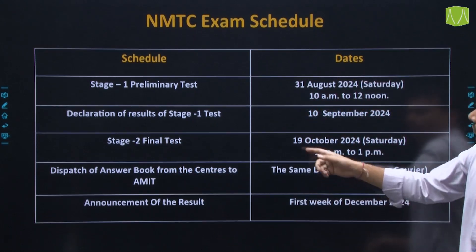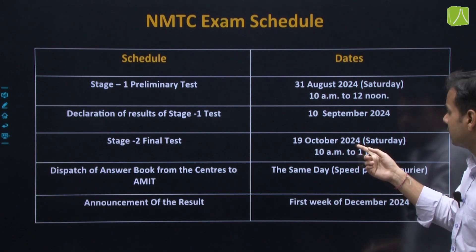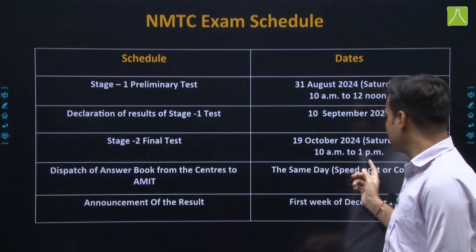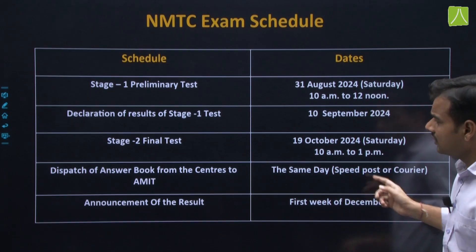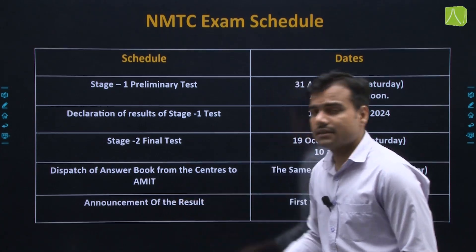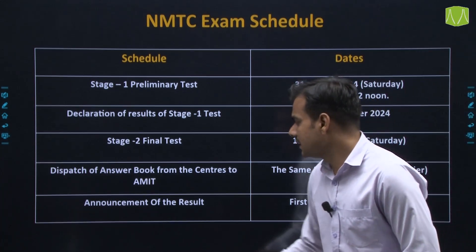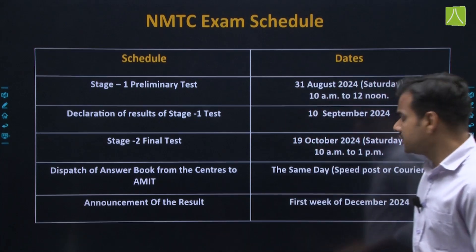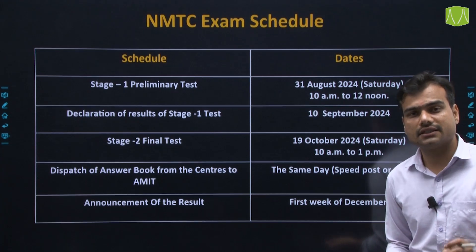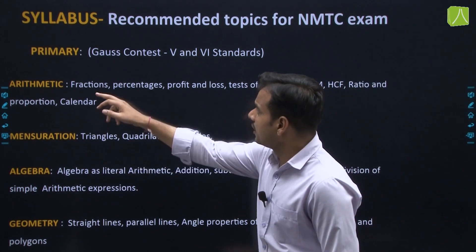Stage 2 — the Final Test — will be held on 19th October 2024, and the timing will be from 10 a.m. to 1 p.m. The results of Stage 1 will be dispatched in December 2024, and the results will be announced in the first week of December.